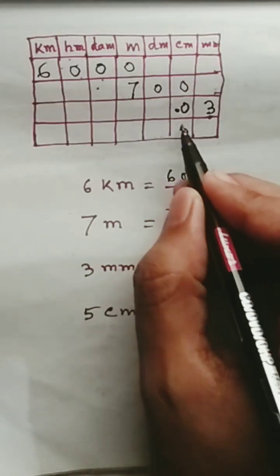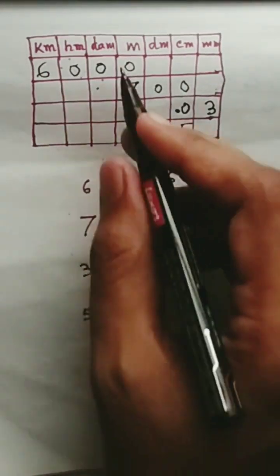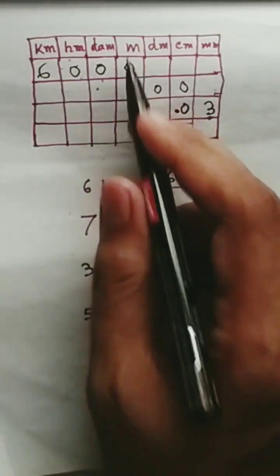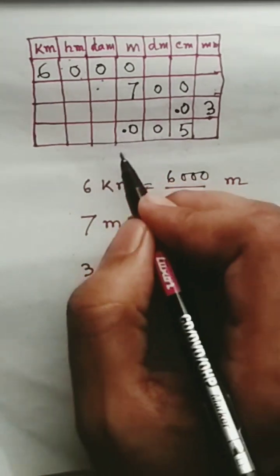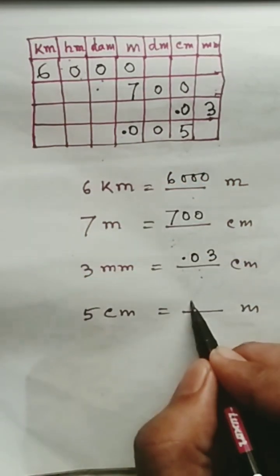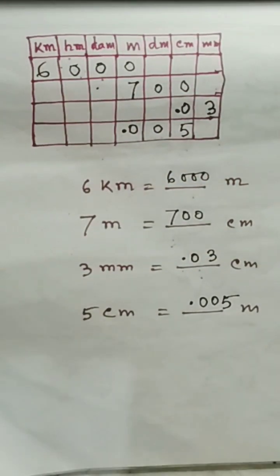Next one. Five centimeters. Okay, five centimeters to meters. Put zero up to meter, then put the decimal point: zero, zero, five. Okay, that's complete.